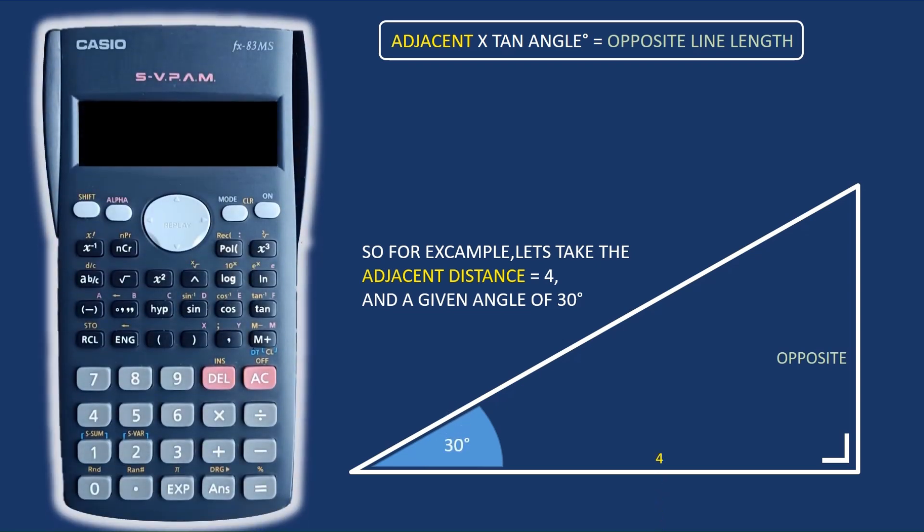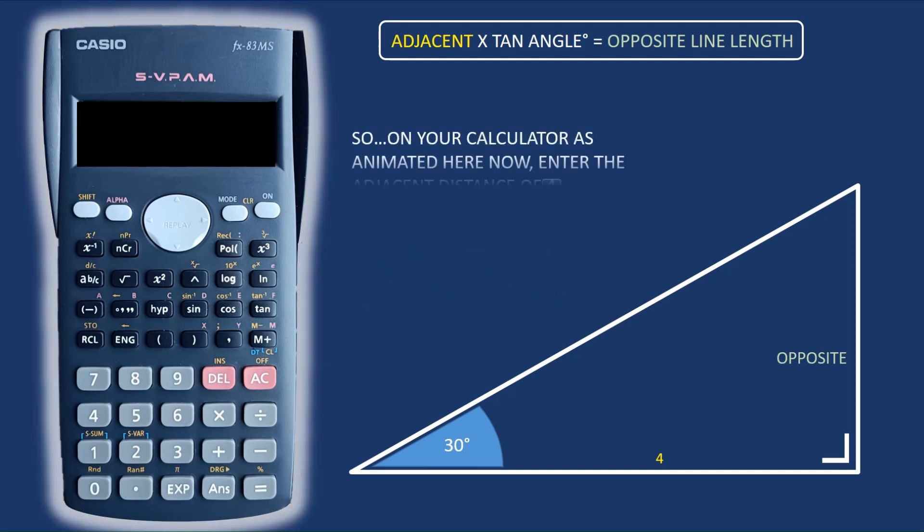In this example we're going to pick an adjacent distance of 4. This is adjacent to the angle and we'll pick the angle as being 30 degrees. So here we've animated the approach used in your scientific calculator.